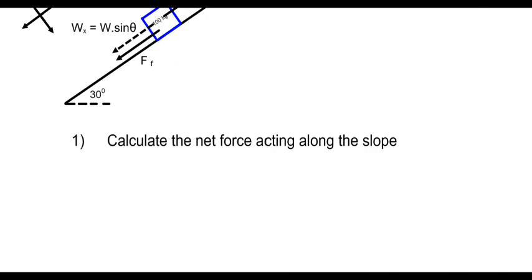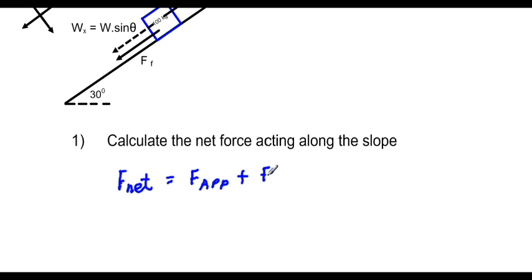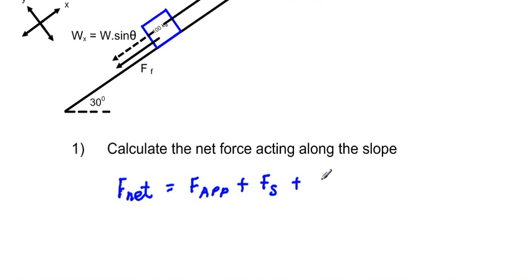Writing down our equation: the net force, F_net, equals the applied force pushing the object up the slope, plus the frictional force acting in the negative direction (down the slope), plus the x-component of weight also acting down the slope. Since forces are vectors, up the slope is positive and down the slope is negative.